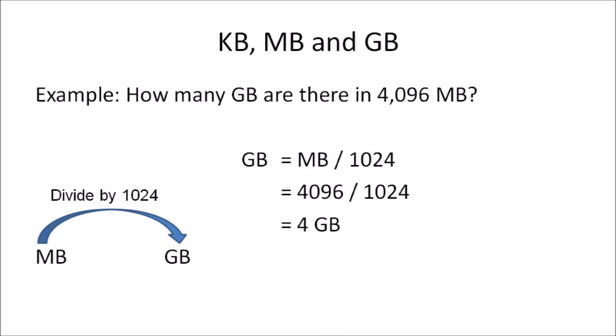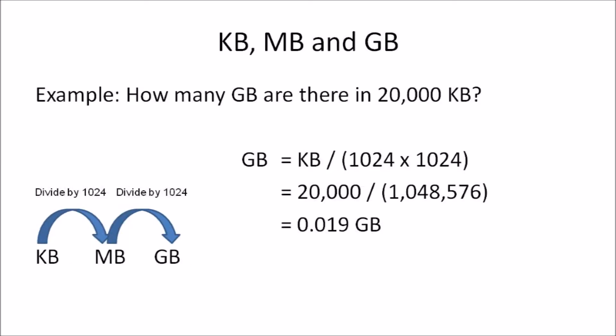Example 2: How many gigabytes are in 4096 megabytes? We're converting megabytes to gigabytes, so we divide by 1024. The formula is: gigabytes = megabytes ÷ 1024. Substituting: 4096 ÷ 1024 = 4 gigabytes.